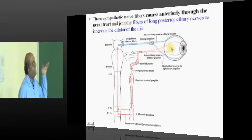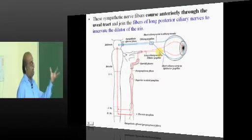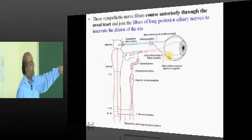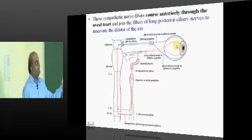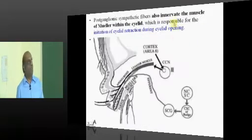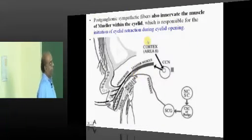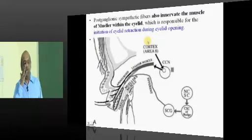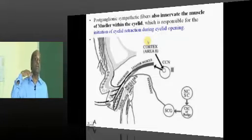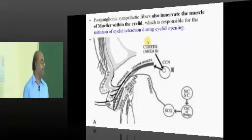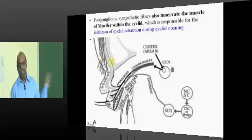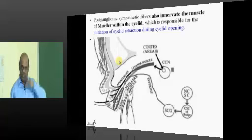The sympathetic fibers course anteriorly through the uveal tract, join fibers from the long posterior ciliary nerves, and ultimately innervate the dilator of the iris. In addition, the postganglionic sympathetic fibers from the superior cervical ganglion also innervate the muscle of Müller within the eyelid — that is why any injury to them will lead to ptosis.